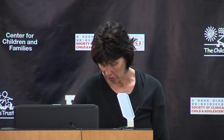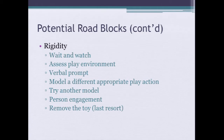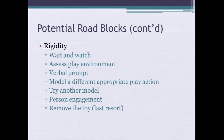Other roadblocks involve the child who's very rigid in their play. You want to wait and watch what happens first, always. You want to assess your play environment for things that might be either inhibiting or a factor in the rigidity problem. You could use a verbal prompt, model a different play action, try a different model, or go back to person engagement. And as a last resort, you're going to remove that toy — but as therapy goes on, you're going to want to bring that toy back in, and we've done this over and over again and are usually pretty successful.